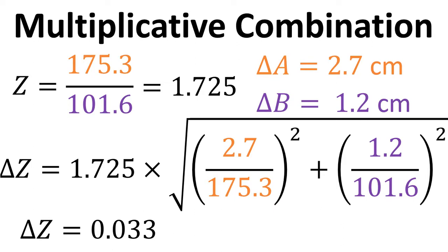So we've worked out the ratio, that's the 1.75, and then we've also got the uncertainty in that value.